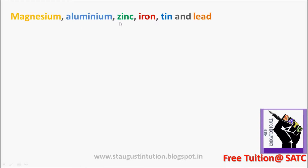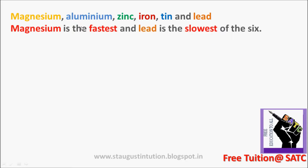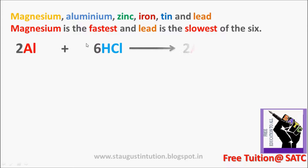The six metals in order of reactivity are: Magnesium, Aluminium, Zinc, Iron, Tin, and Lead — that is 1, 2, 3, 4, 5, 6. Magnesium is the fastest and lead is the slowest of the six. Magnesium reacts with hydrochloric acid to form magnesium chloride plus hydrogen.